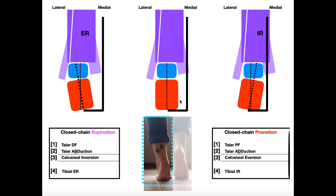Now let's first look at supination — closed-chain supination. There are several things that happen here. Number one, notice that we get talar dorsiflexion. That means the talus is actually going to dorsiflex relative to the calcaneus — the anterior part of the talus rotates up a little bit, and the posterior part of the talus rotates down a little bit. Just like you can have your whole foot dorsiflex, you can also have the talus individually dorsiflex. The other thing that happens is the talus is also going to abduct — it's going to move away from the midline. Notice that the talus has actually translated a little bit away from that midline — in subtalar joint neutral the talus is more or less right on the midline, but over here in supination, that talus is going to abduct a little bit.